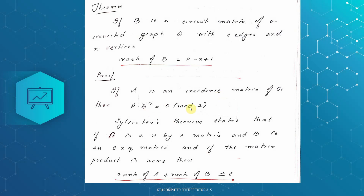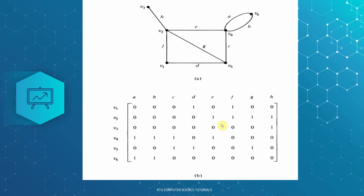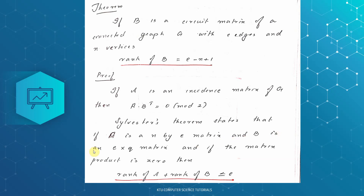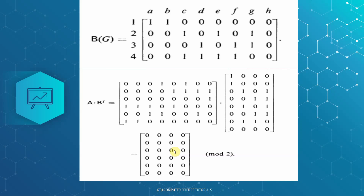A is an incidence matrix and B is a circuit matrix. A is an incidence matrix over N vertices, so it will be an N by E matrix. Sylvester's theorem states that if A is an N by E matrix — an incidence matrix with N vertices — and B is an E by Q matrix, then B transpose is an E by Q matrix.